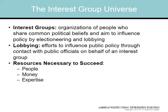Interest groups influence policy by electioneering — influencing the outcome of elections — and by lobbying, which means directly appealing to or talking to decision makers who are already in office. Lobbying is efforts to influence public policy through contact with public officials on behalf of an interest group.